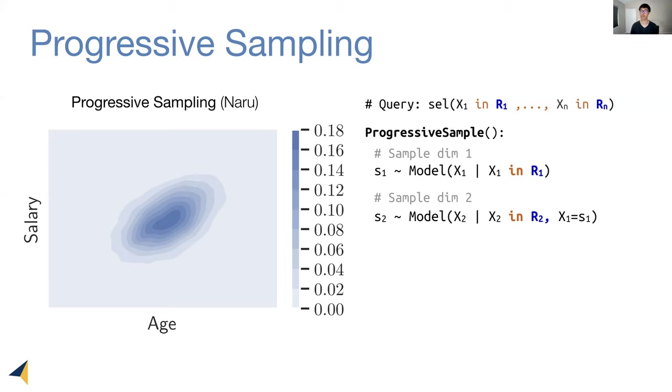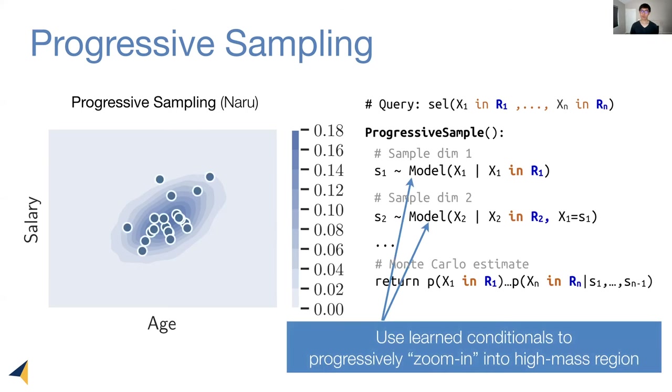We keep on going until we obtain a completed tuple. We then return this product here as an unbiased estimator for the desired selectivity. The intuition of the algorithm is we leverage these learned conditionals to progressively zoom in into more meaningful and high mass regions. Therefore, they make our sample tuples more effective, increasing the statistical efficiency of the algorithm.